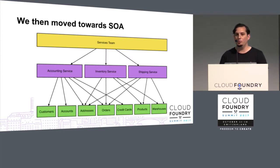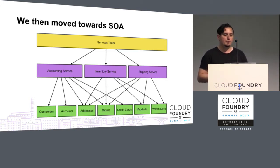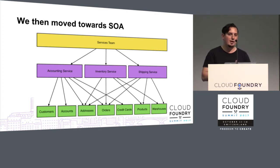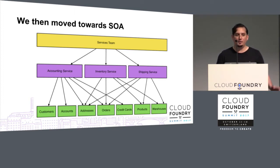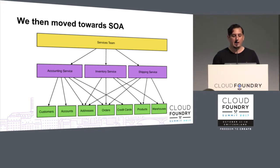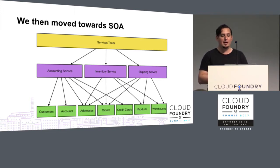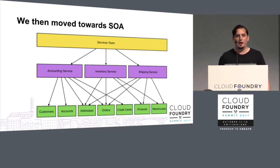On the way to microservices, we moved to SOA. We got a little better in terms of infrastructure — I have three applications here: an accounting service, inventory service, and shipping service. We've split up that single monolithic application into three separate applications. But the problem over time with SOA is that at the bottom we're still sharing libraries. We're sharing domain objects, and different teams may need to change one of those domain objects. If I change the address record, I have to deploy all three applications at the same time in a coordinated release. So over time, SOA makes it harder than the monolith.